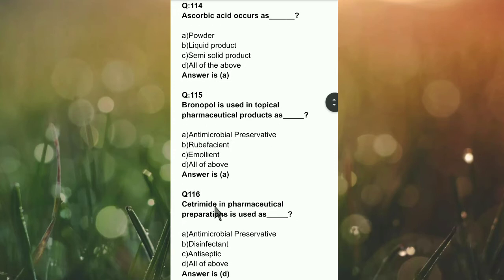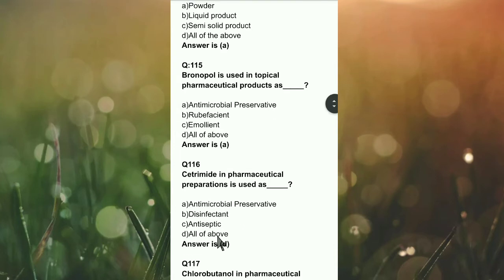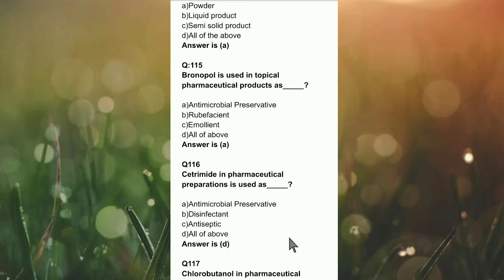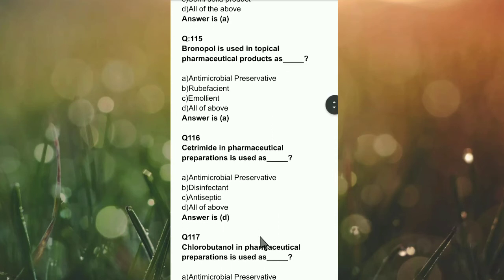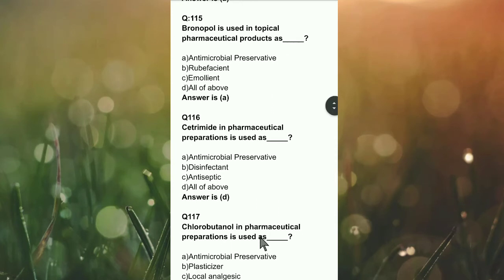Question number 116: Cetrimide in pharmaceutical products is used as antimicrobial preservative, disinfectant, antiseptic, or all of the above? The right answer is D — cetrimide is used as an antimicrobial preservative, disinfectant, and antiseptic.